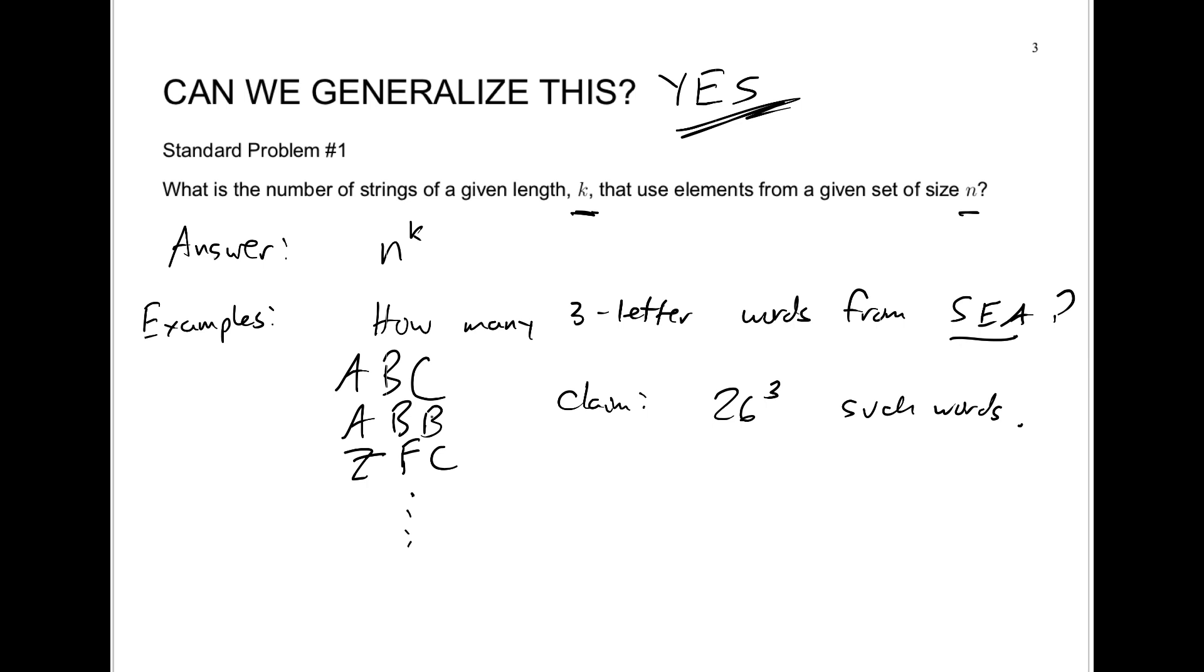We're going to be talking about this in a lecture for Thursday, I think. It'll be what we call the product, where we just multiply the number of choices together, the number of choices we had for each position in this case. We'll be able to prove this formally with mathematics. Our next lecture, we'll talk about the idea of proof and how we can formalize all of this.